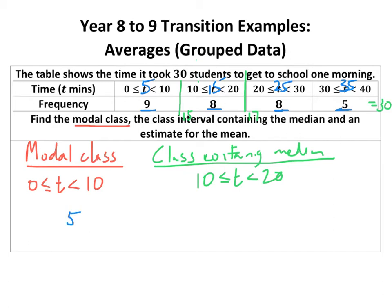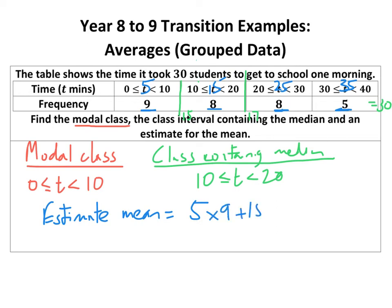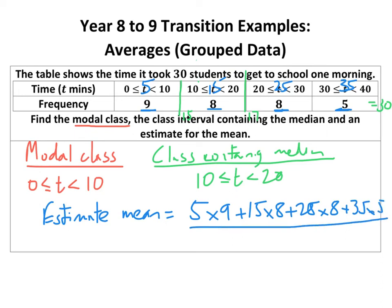To estimate the mean, we calculate: five times nine, plus 15 times eight, plus 25 times eight, plus 35 times five. A common mistake here is to divide by the number of groups, but that's not the number of students. There are 30 students, so we divide by 30.